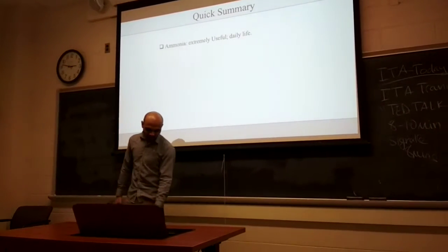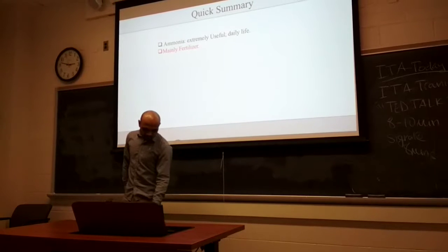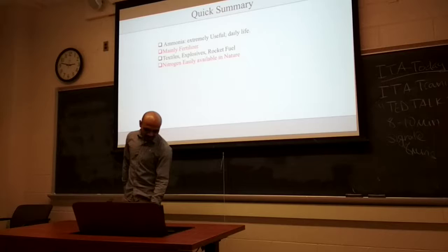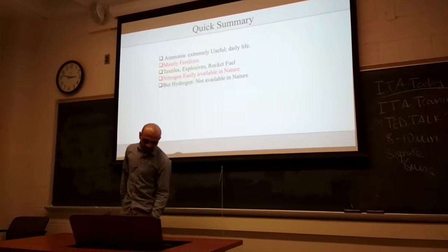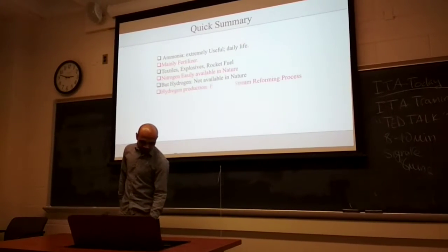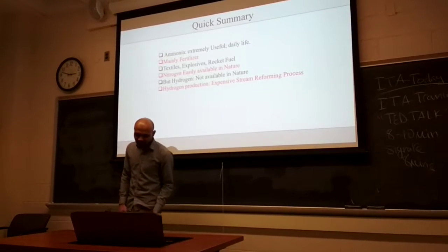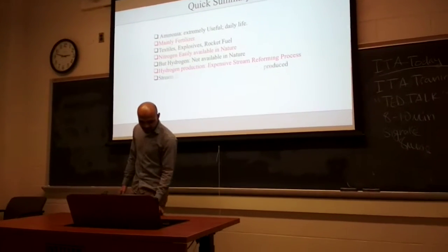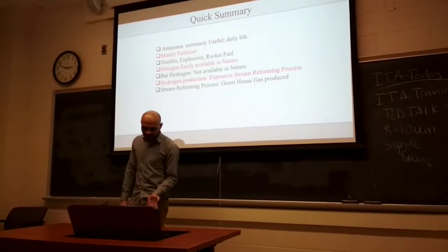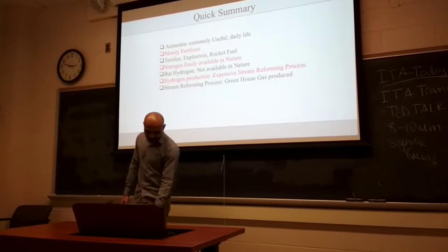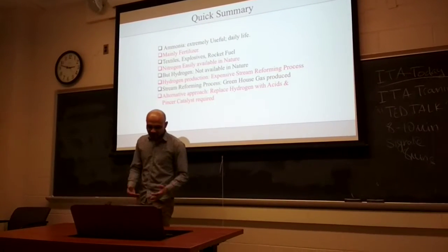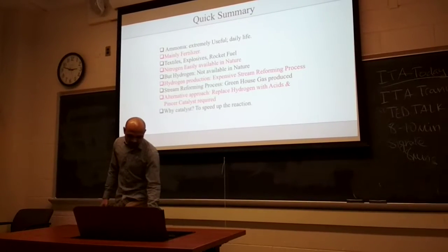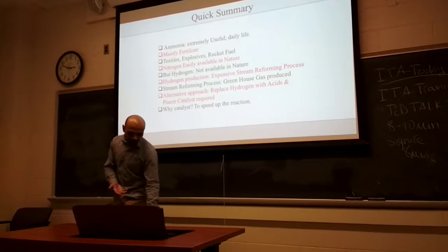How is ammonia useful in daily life? Mainly fertilizer, explosives, rocket fuel — those are the other usages. Hydrogen is not easily available in nature. Hydrogen production uses the expensive steam reforming process, which produces greenhouse gases. The alternative approach is replacing hydrogen with different types of acid and complex compounds, using a catalyst to speed up the reaction.